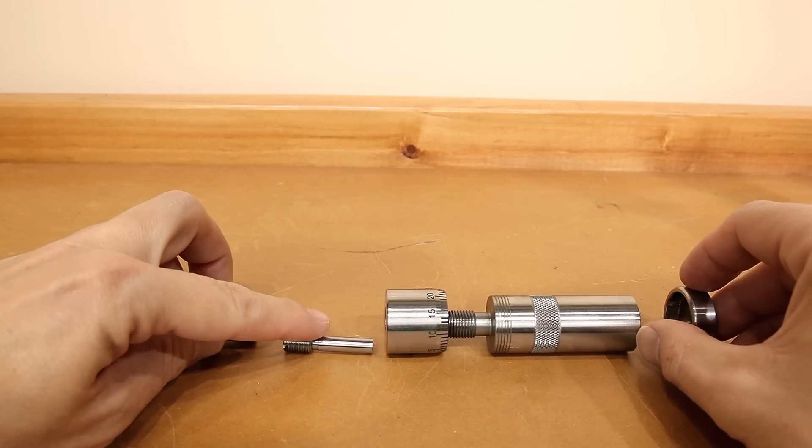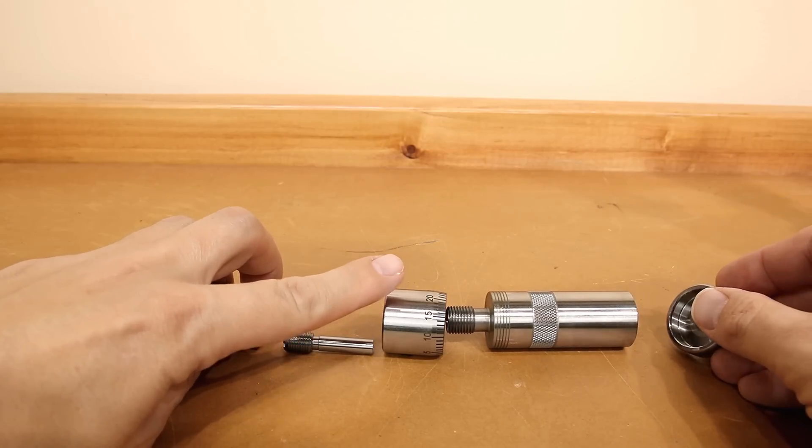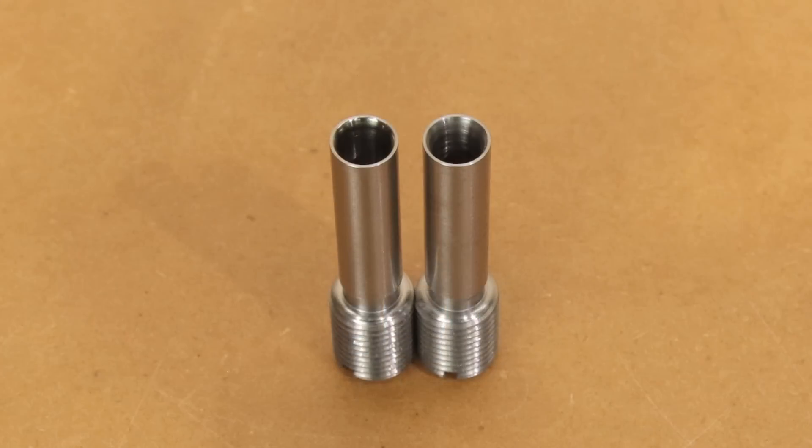This is the cap, the seating stem, the micrometer, the die body, and the base. There are two versions of the seating stems available, a standard as well as a VLD option.